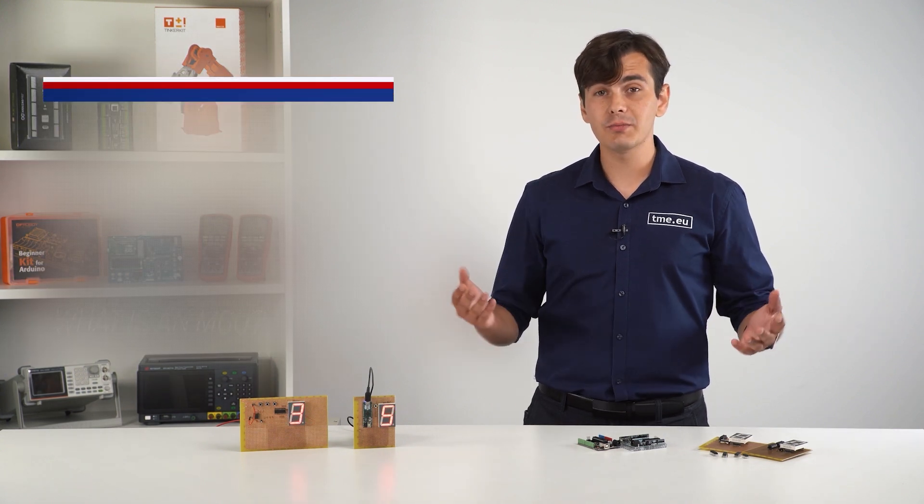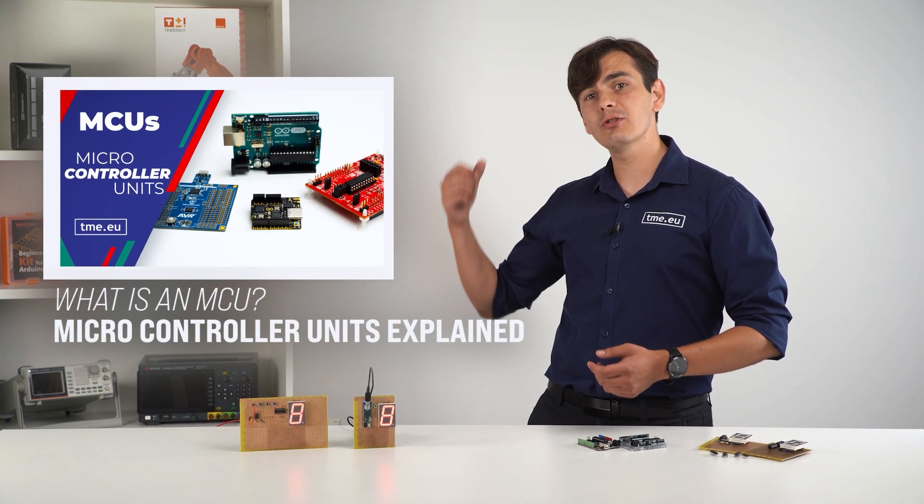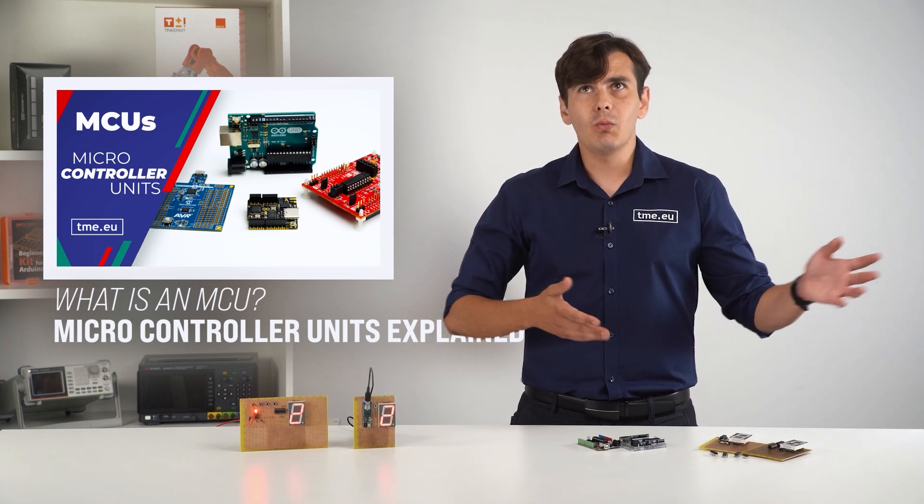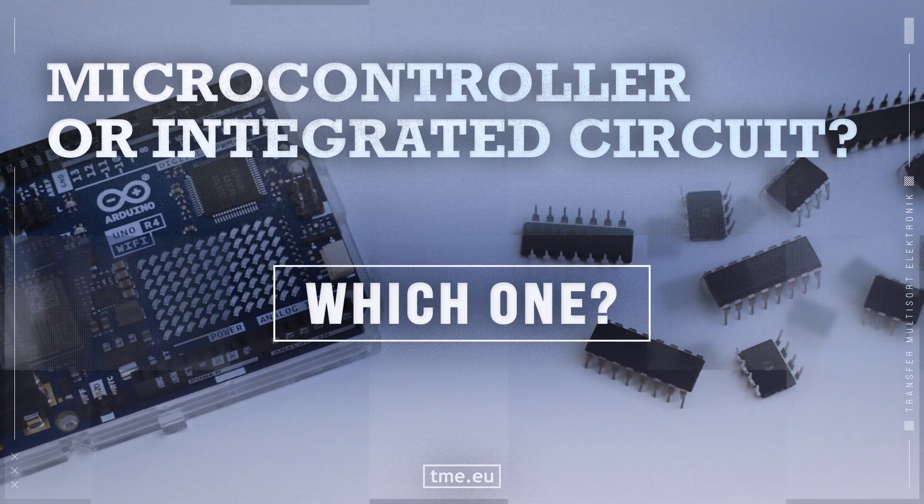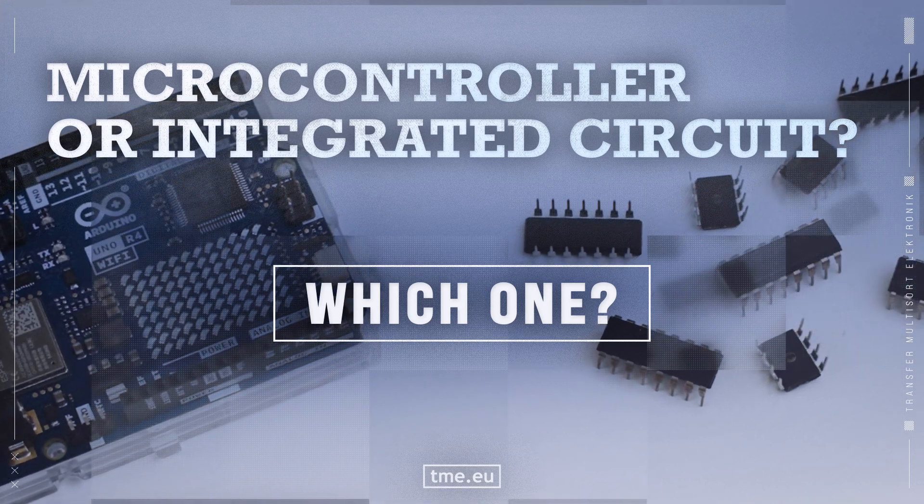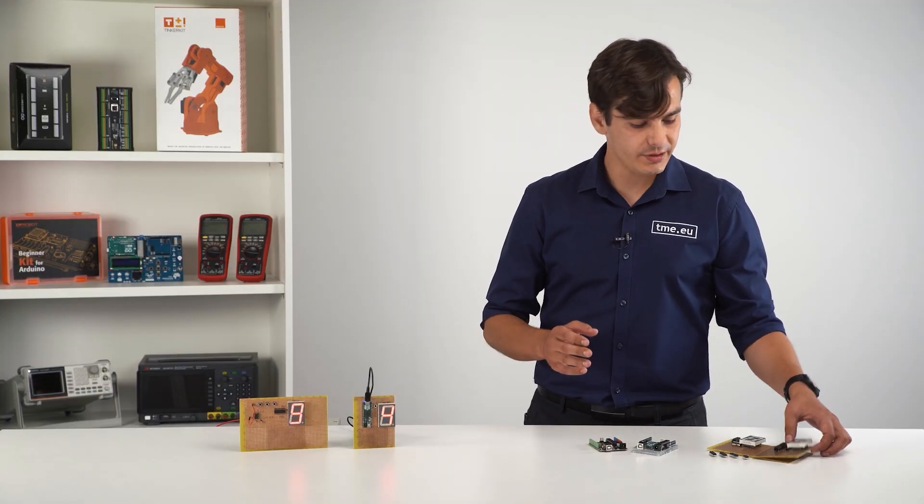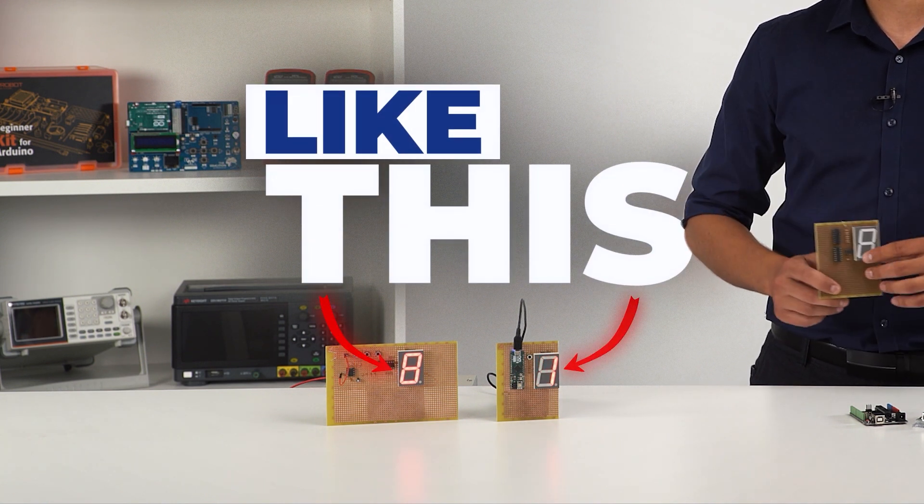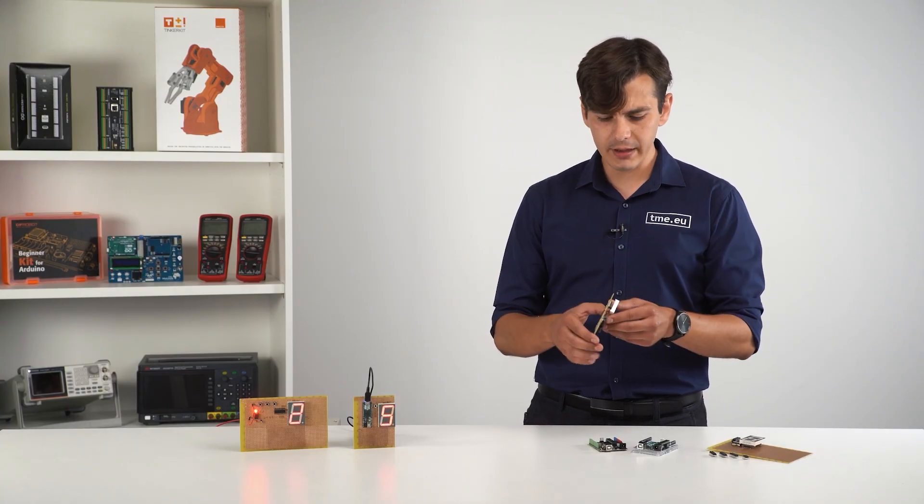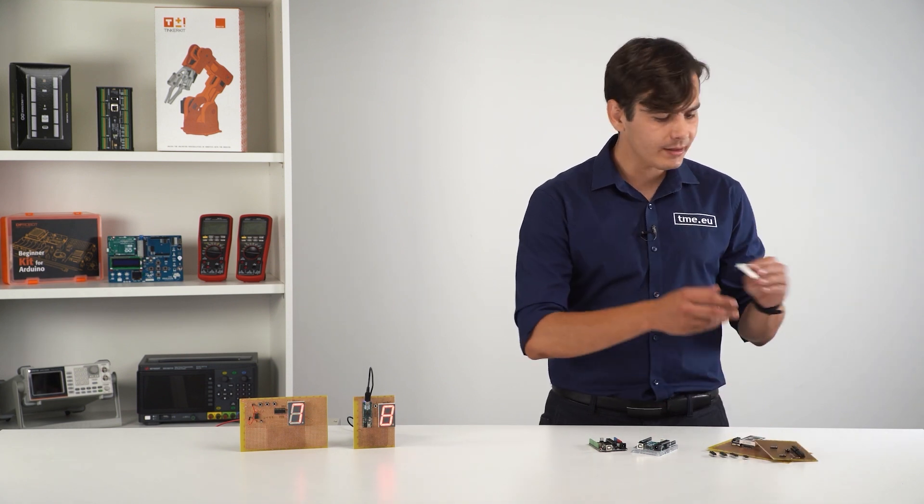If you have no clue what MCU is, you can check our previous episode where we talk about what they are, what they consist of and what they can do. The main idea of those circuits is to drive a seven segment display in various ways and compare the building process complexity. But let's find out what a seven segment is and what kind of types we have.